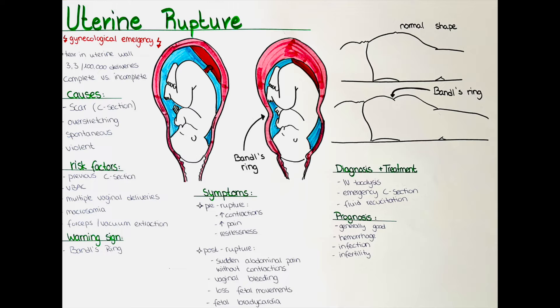Uterine ruptures can also occur spontaneously. Spontaneous uterine rupture is a rare type of uterine rupture. It is more likely to occur in women who have underlying medical conditions such as hemangioma or endometriosis.